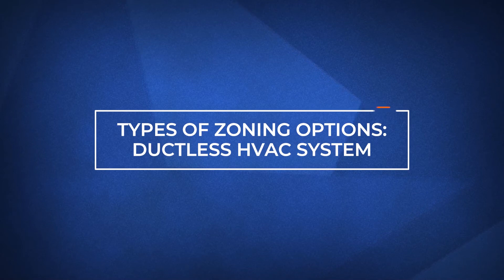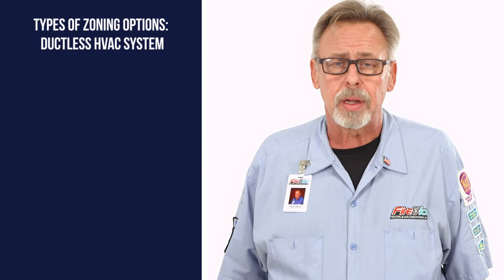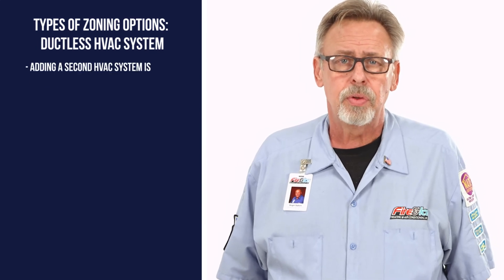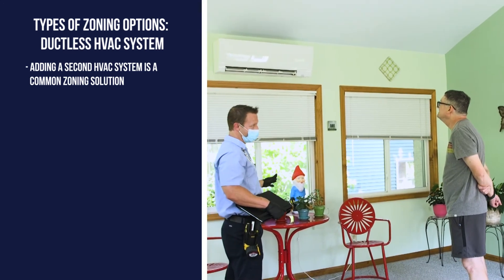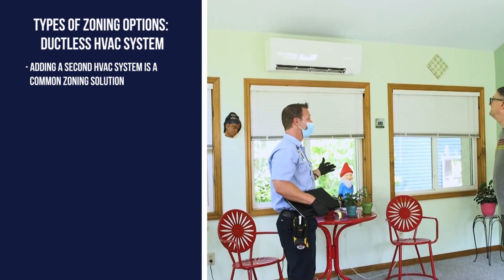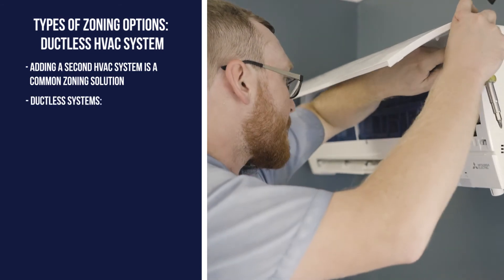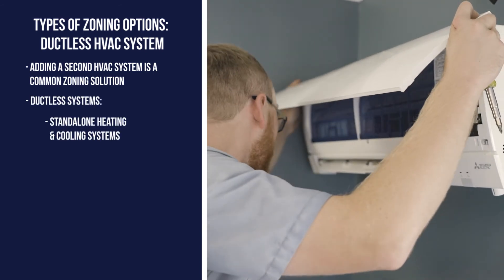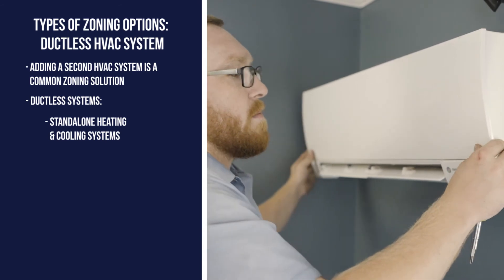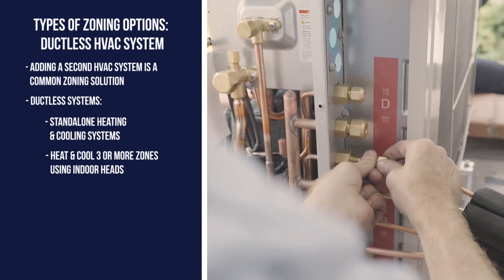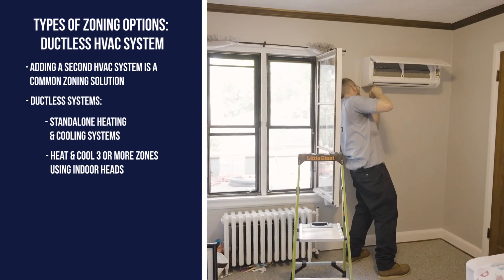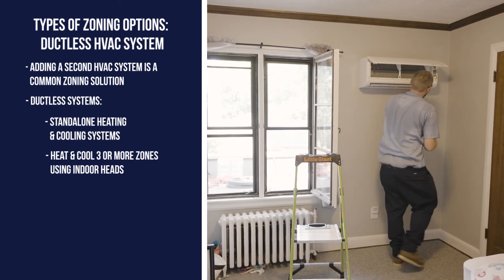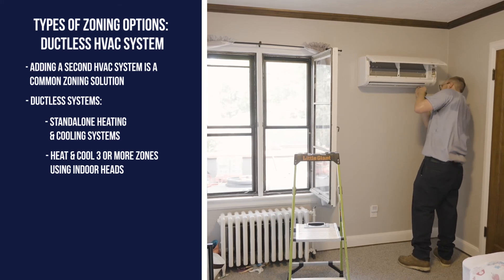You might be asking yourself: didn't he say there are three types of zoning options? And you would be correct. The third option is to use a second HVAC system to address another area of the home. One of the most common solutions in this arena are ductless systems. Ductless systems are standalone HVAC systems that can both heat and cool a specific area or zone. Most ductless systems are capable of heating and cooling multiple zones of three or more. They do this by having one or more indoor heads in different rooms or areas of a home that connect to an outdoor unit.